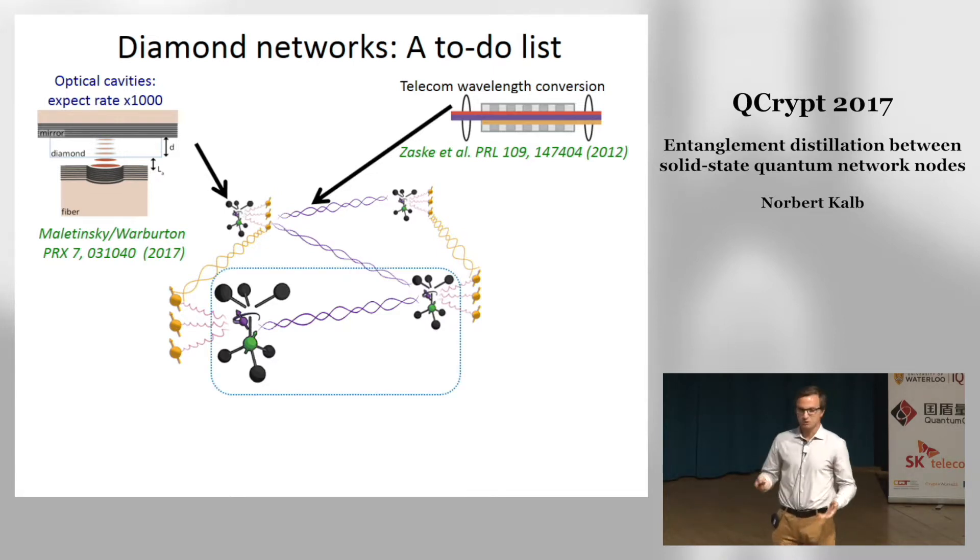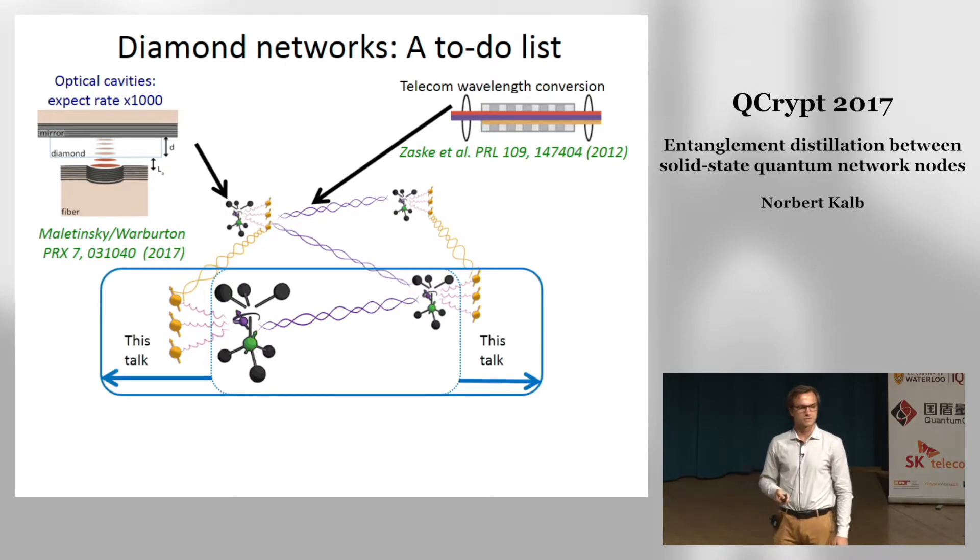There's one conceptual thing we still have to overcome. Whenever we have created entanglement between our two NV centers we only used NV centers as a coherent resource. We never considered the memories surrounding them during our entangling protocols. And this is what we're going to do in this talk—we're going to extend our network functionality to multi-qubit network nodes.